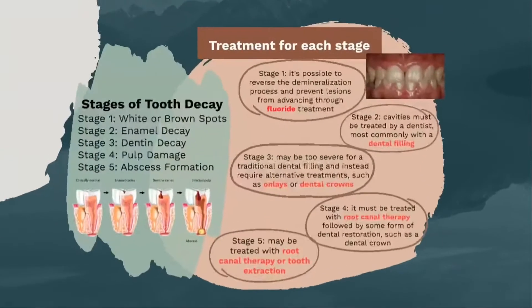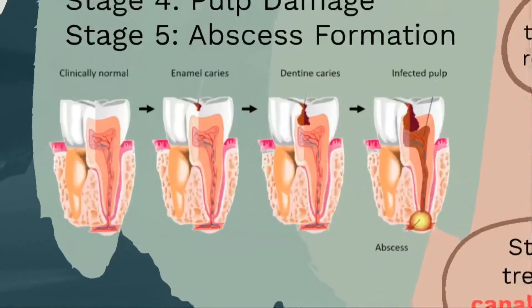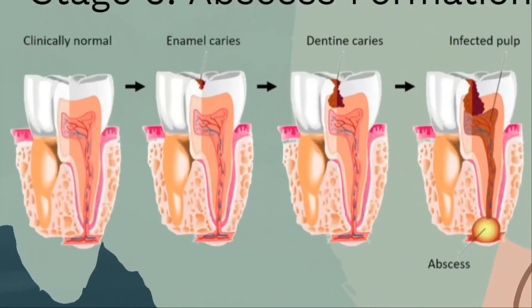So what are the stages of tooth decay? There are five stages of tooth decay. Stage 1: white or brown spots. Stage 2: enamel decay. Stage 3: dentin decay. Stage 4: pulp damage. Stage 5: abscess formation. This picture shows the clinical extension of caries.